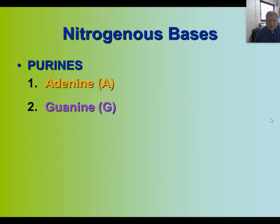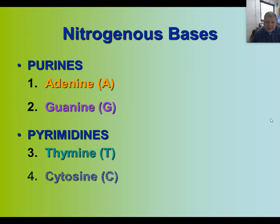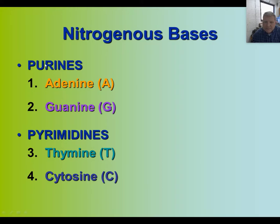The two types of purines are adenine and guanine. The pyrimidines are thymine and cytosine. The easiest way to remember this is that pyrimidine has a Y in it, thymine has a Y in it, and cytosine has a Y in it — so those are the pyrimidines. The purines are just the opposite: adenine and guanine.